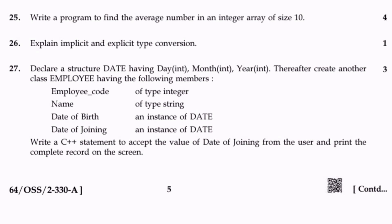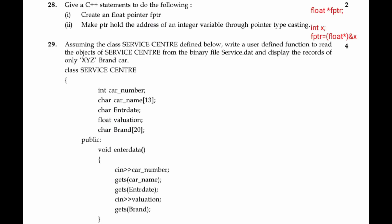Question 27: Declare a structure date having day (int), month (int), year (int). Then create a class employee having: employee code (integer), name (string), date of birth (instance of date), date of joining (instance of date). Write a C++ statement to accept the value of date of joining from the user and print the complete record on screen. Pause the video and see the answer. Question 28: Write C++ statements to: 1) Create a float pointer fptr — float *fptr; 2) Make fptr hold the address of an integer variable through pointer type casting — int x; fptr = (float*)&x.